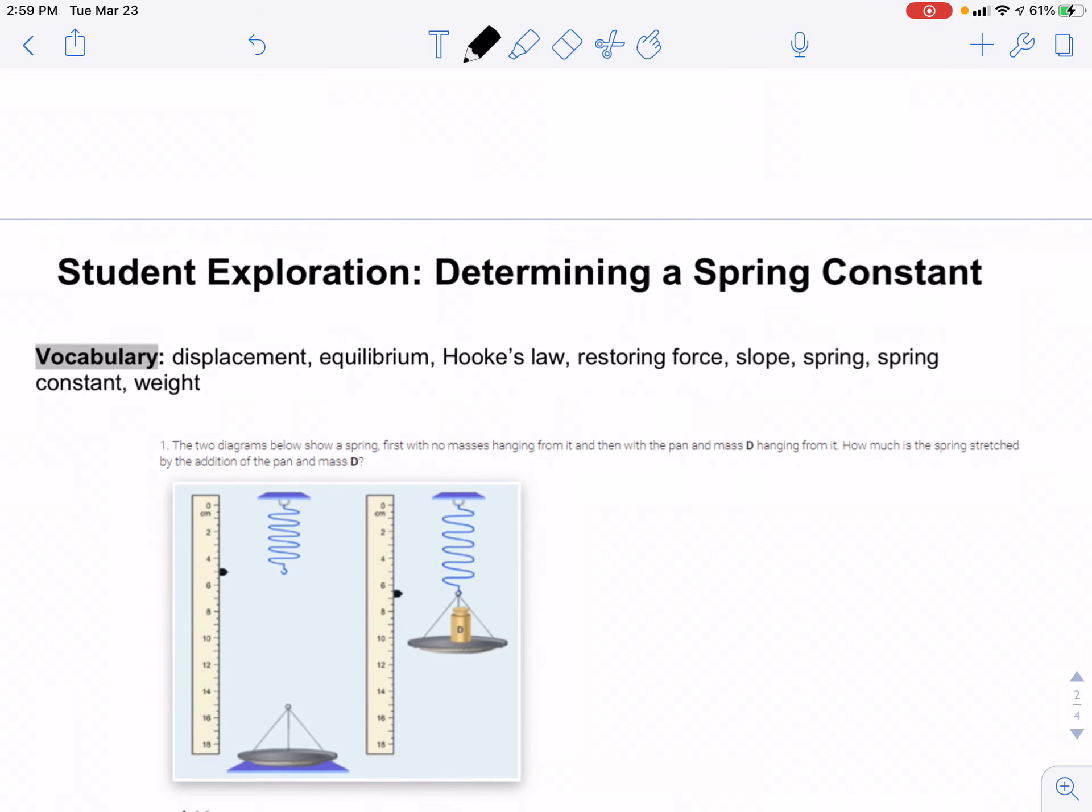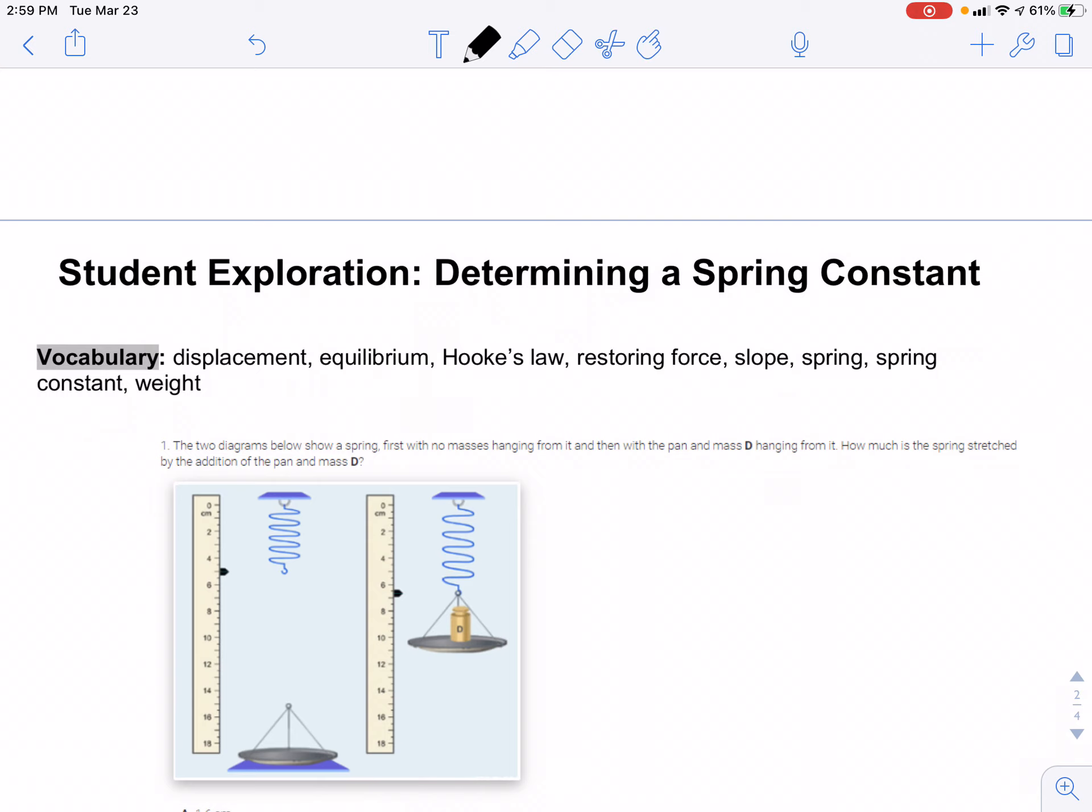The concepts for this lab are displacement, which represents how far the spring was stretched; equilibrium, which is the point at which the spring is not being stretched or compressed; Hook's law, which refers to the restoring force on a spring being directly related to the displacement of that spring; and the restoring force itself, which is the spring wanting to compress or stretch itself back towards equilibrium. In other words, the spring wants to reestablish equilibrium.